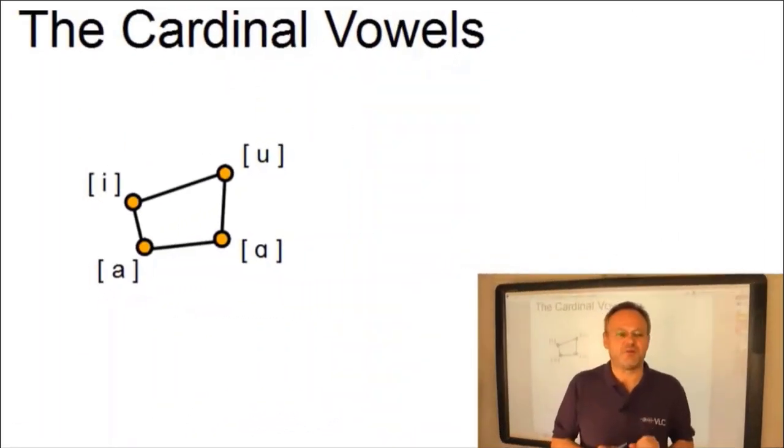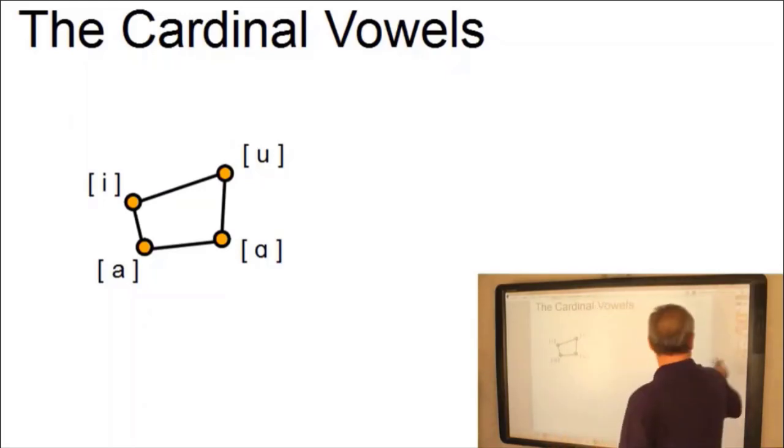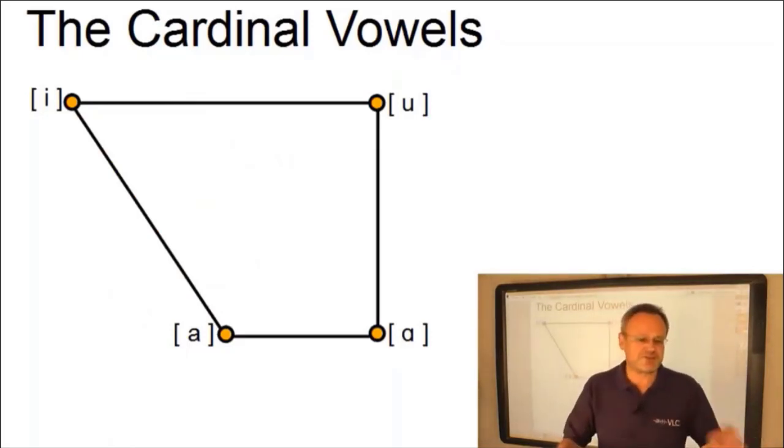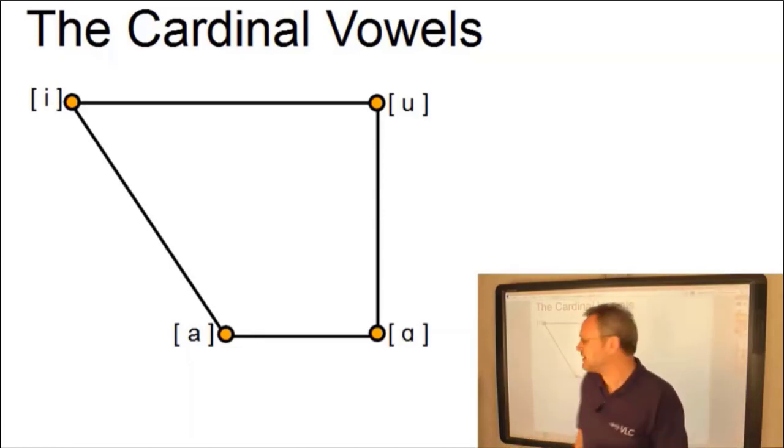In a modified form with clearly defined geometrical proportions, this quadrilateral may now serve as a reference model for the definition of the articulation of further vowels. The proportions of this reference model or coordinate system are clear, and this is how to construct it.